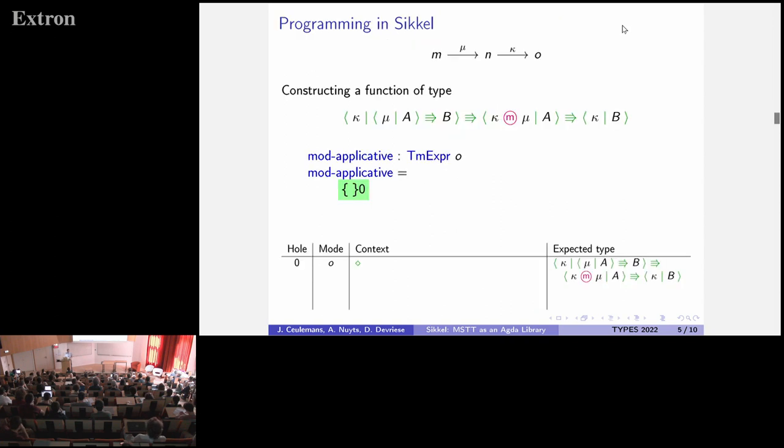So what does a program in SICKL look like? Well, suppose that we have the following mode theory with three modes and two modalities. And now we want to construct a function of the following type. So here this circled M is composition of modalities. And so a function of this type is kind of an applicative operator for the modality kappa restricted to modal functions of type mu A to B. So what we need to do is, well, we have this empty context and we want to construct a function of this type. So it's a modal function. So we're going to use modal lambda abstraction. And the effect of this is that we extend our context with a new variable. And as you can see in MSTT, every variable appears in the context under a certain modality. So here it's under the modality kappa.